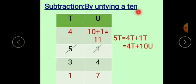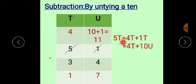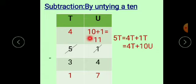Now, subtraction by untying a 10. See this example: 51 minus 34. The number 51 is bigger than 34, but we always start subtraction from the units place. In the units place, this 1 is smaller than 4, so we cannot subtract 4 from 1. We have to borrow from the tens place. In 5 tens, if we take 1 ten, then 5 tens becomes 4 tens plus 1 ten. So write 4, and that 1 ten is 10 units. So write 10 units plus this 1, giving us 11.